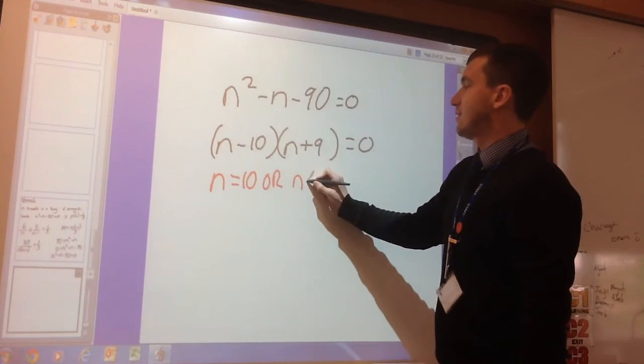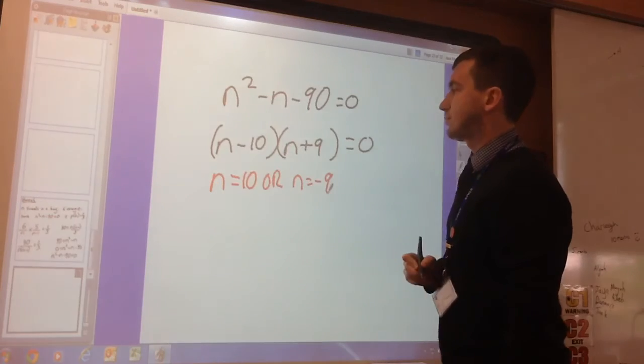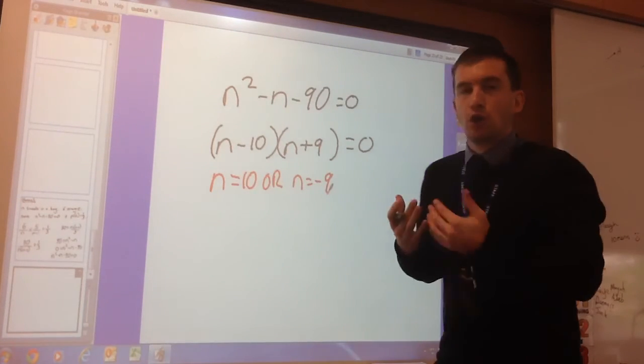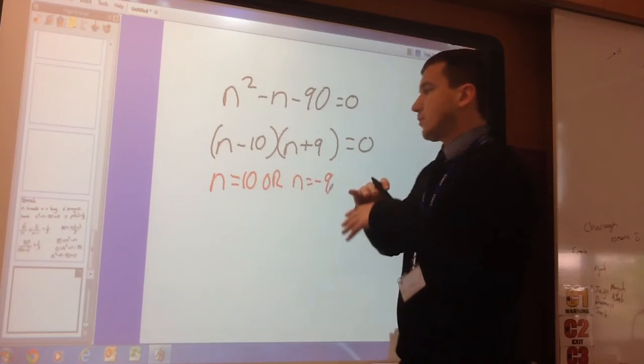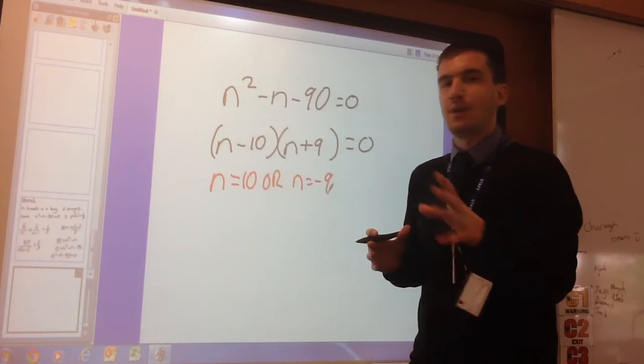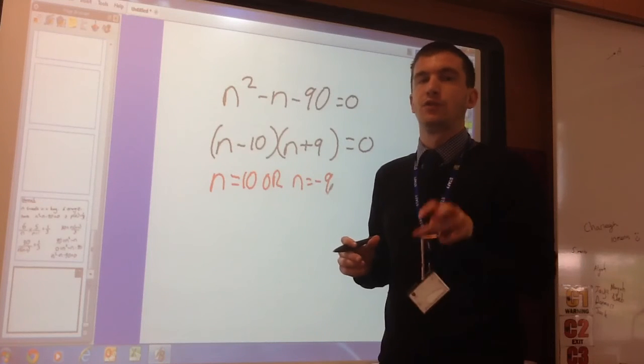Or N is negative 9. So these are the numbers that you could get. But again, you're taught with, well, I teach and we're taught that the two values are correct. However, this is a real life example of sweets in a bag.